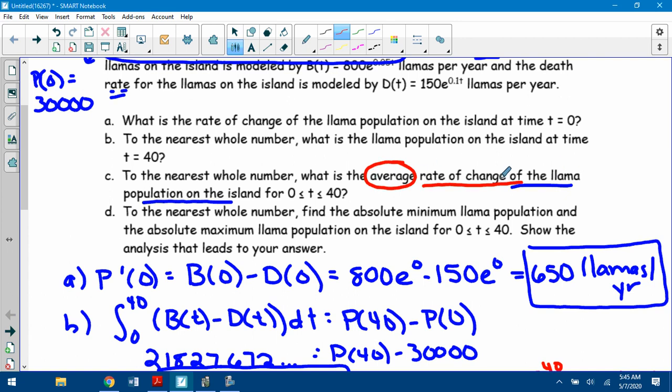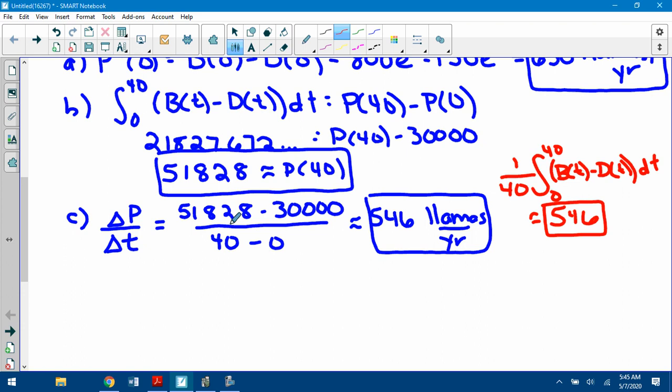If it's the average rate of change of something else that you have, that's together. Average rate of change means slope of the thing we're looking for.